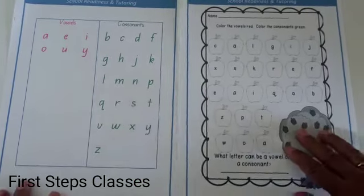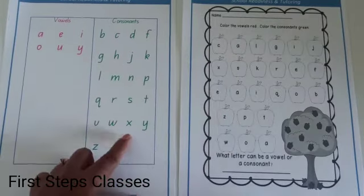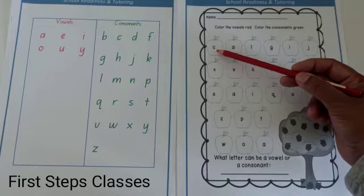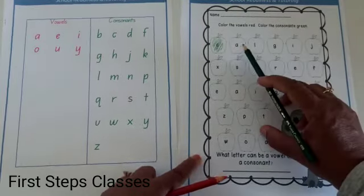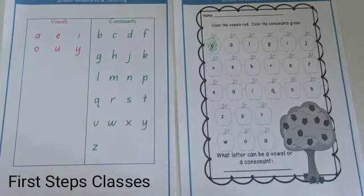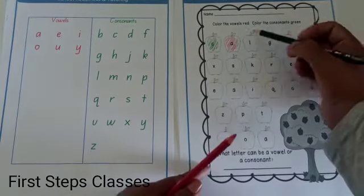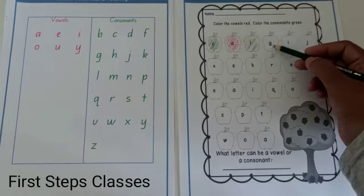Alright, so here we have a worksheet where we have to color the vowels in red and the consonants in green. Let us look at the first letter C, which makes a C sound. Is it a consonant or a vowel? It is a consonant, so let us color that in green.